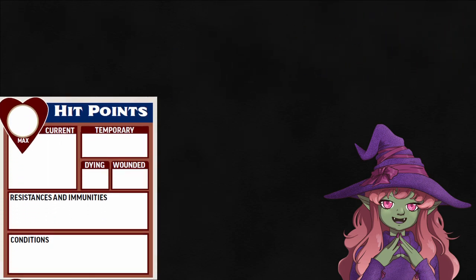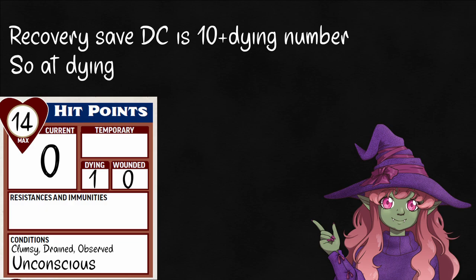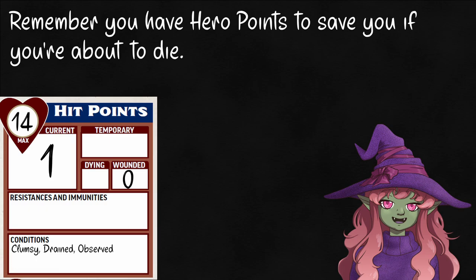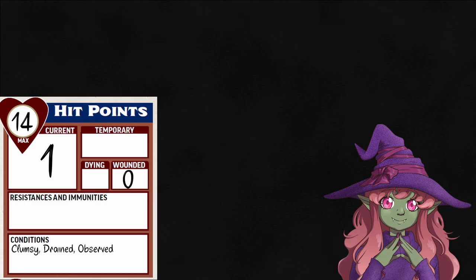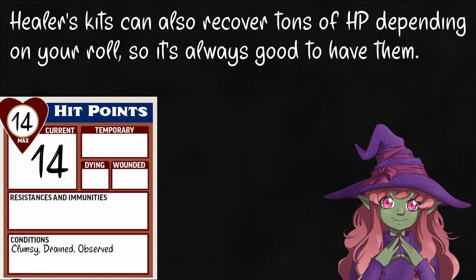HP is how far you are from dead. When you hit 0 HP, you're unconscious — slap a 1 into your dying box. If you have a number in your wounded box, add that as well. Every round, you make a recovery check, just a straight die roll: add one dying if you fail, take one away if you succeed. If that number hits 4, you're dead. If it drops to 0, you're no longer dying but stay unconscious until you're not at 0. You'll also stop dying immediately if you heal at any point. As soon as you stop dying, add one to your wounded box. Next time you drop, you start with one dying plus whatever's in the wounded box. To make that wounded number go away, heal to full HP or treat the wound with a healer's kit — only takes 10 minutes.